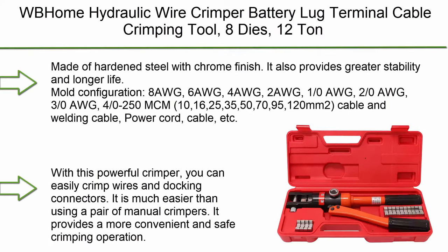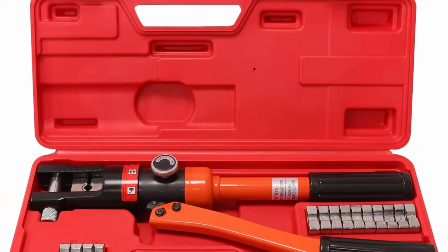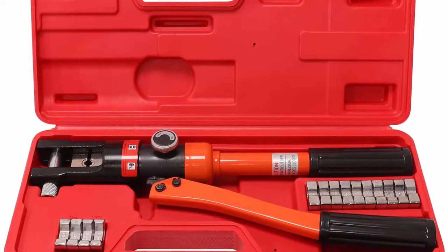Top 10: Bone Hydraulic Wire Crimper Battery Lug Terminal Cable Crimping Tool, 8 dies, 12 ton, made of hardened steel with chrome finish. It provides greater stability and longer life mold configuration.